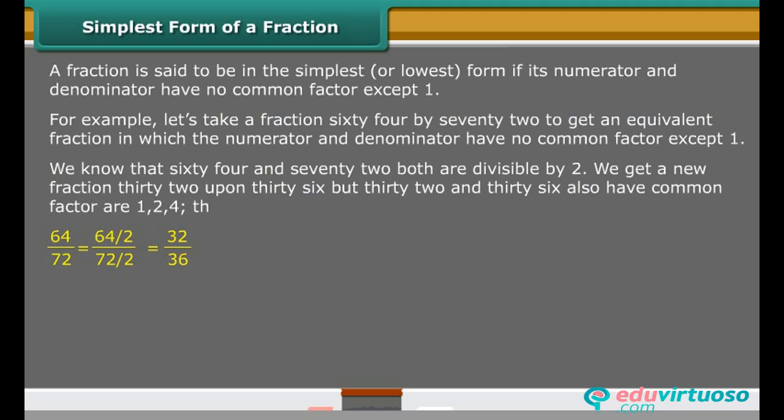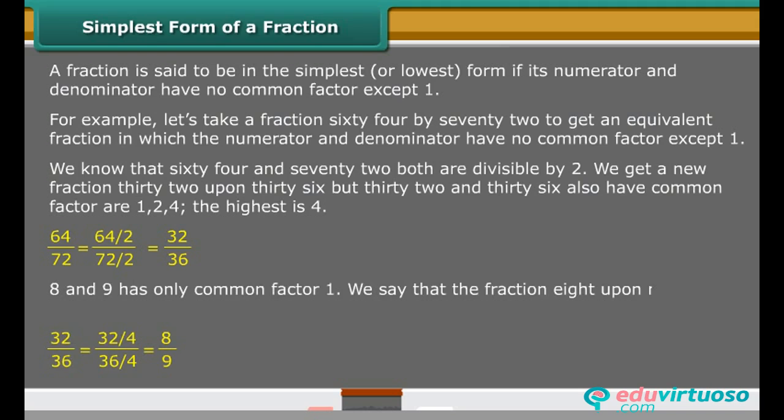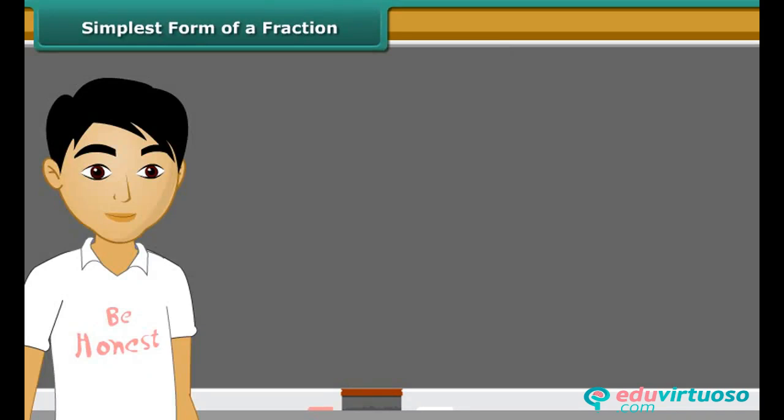But 32 and 36 also have common factors of 1, 2, and 4. The highest is 4. 8 and 9 have only common factor 1. We say that the fraction 8 upon 9 is the simplest form of 64 upon 72.